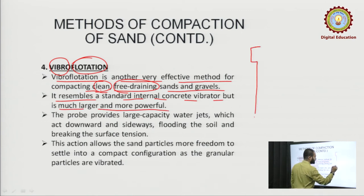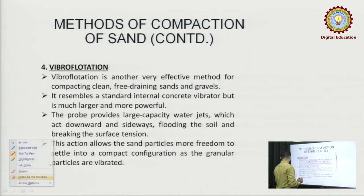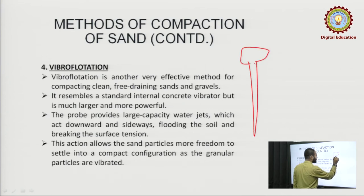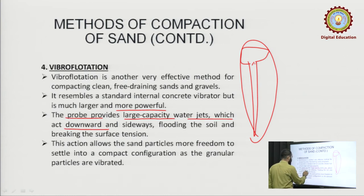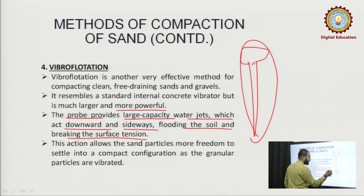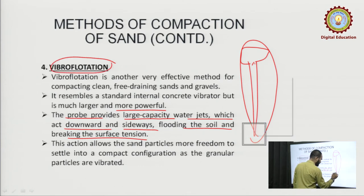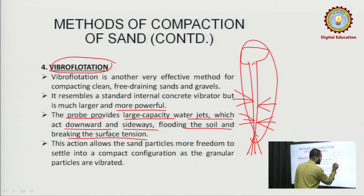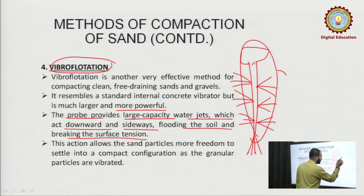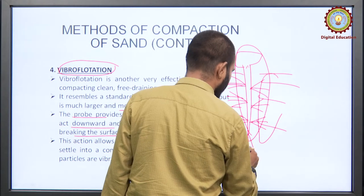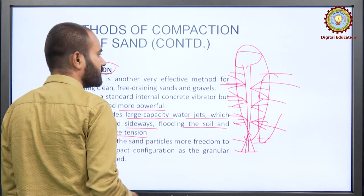You must have seen a needle compactor used for concrete — the shape is similar, but vibroflotation is larger in size and more powerful. The probe provides large-capacity water jets which act downward and sideways, flooding the soil and breaking the soil surface tension. In vibroflotation, water jets ooze out from different holes made onto the body of the probe, causing flooding in the adjacent parts of the soil.